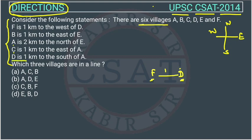The fifth statement is useful because it uses D, which we have already drawn. D is 1 kilometer to the south of A. Since D is to the south, A will be to the north of D — so we place A here, 1 kilometer above D. Now we have three points plotted: F, D, and A.